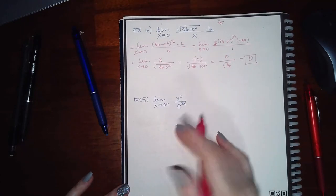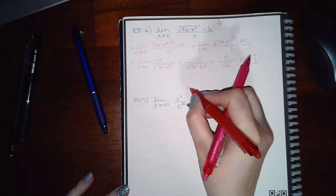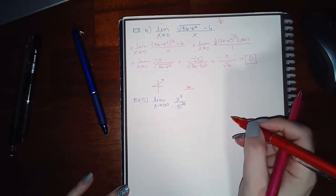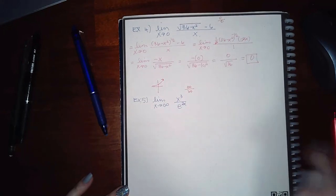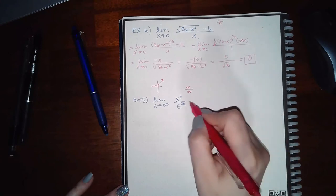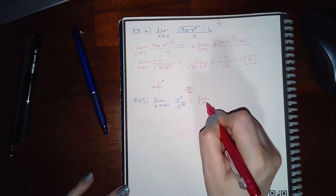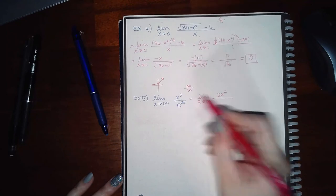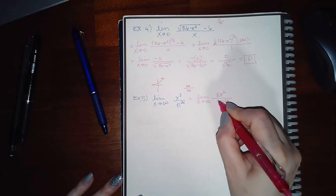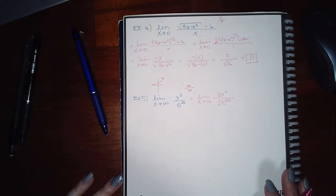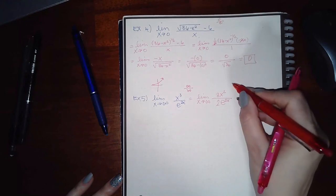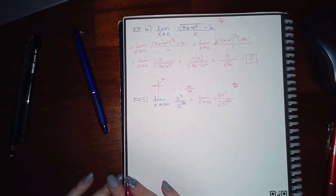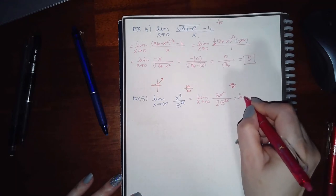For Example 5, the limit involves a polynomial over an exponential as x goes to infinity. Plugging in infinity gives infinity over infinity — an indeterminate form — so we apply L'Hopital's Rule. The derivative of the numerator (x³) is 3x², and the derivative of e^(2x) is 2e^(2x). Plugging in infinity still yields infinity over infinity, so we apply L'Hopital's Rule again, getting 6x over 4e^(2x), which is still infinity over infinity.